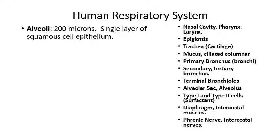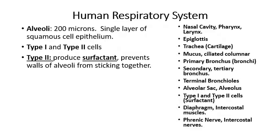How big are the alveoli? They are approximately 200 micrometers or 200 microns across in diameter. Remember there are a thousand micrometers in a millimeter, so each alveolus is about 0.2 millimeters in diameter — you can see it under low magnification with a dissecting microscope. The squamous cell epithelia that make up the alveoli are divided into two categories based on function. The type one cells are squamous cell epithelia that don't produce anything — they're just there for structural support, making up the structure of the alveoli.